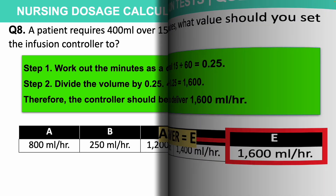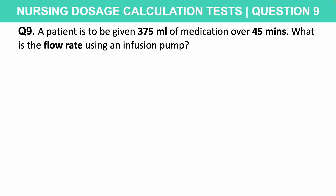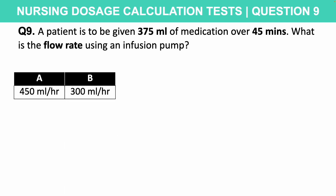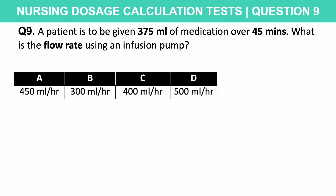Now I want you to have a go at this yourself. Question nine: a patient is to be given 375 millilitres of medication over 45 minutes. What is the flow rate using an infusion pump? Is it A: 450 ml/hr, B: 300 ml/hr, C: 400 ml/hr, D: 500 ml/hr, or E: 250 ml/hr? 20 seconds on the timer starts now.